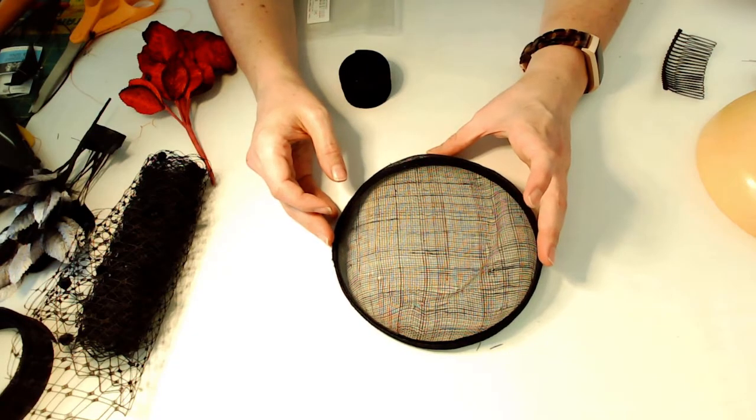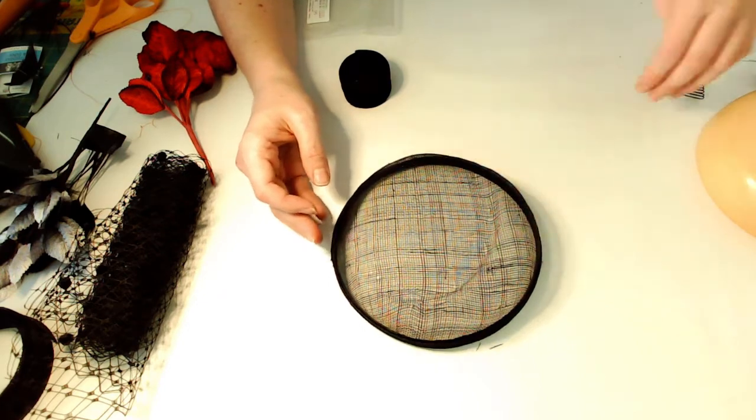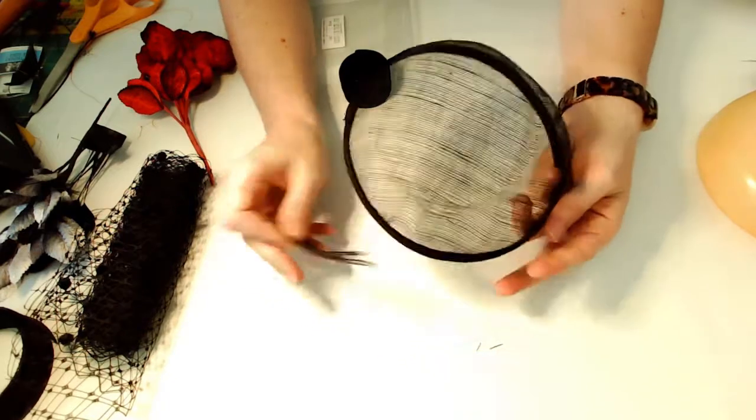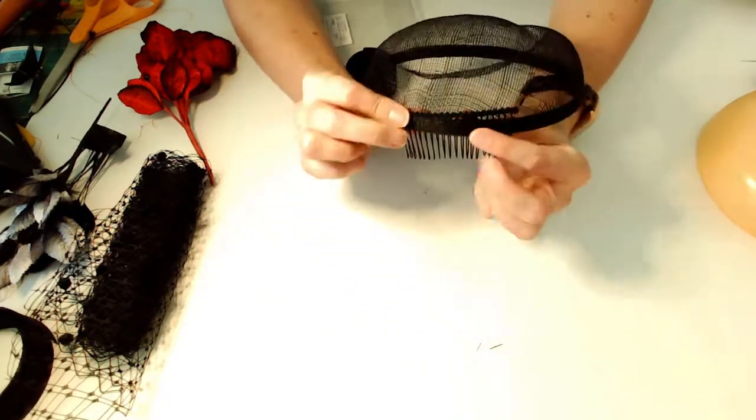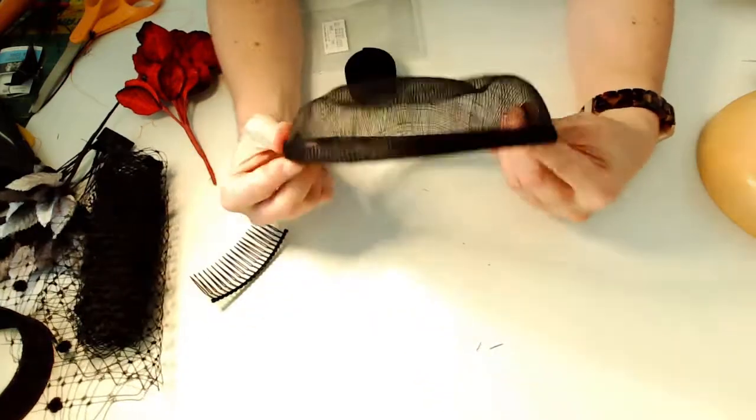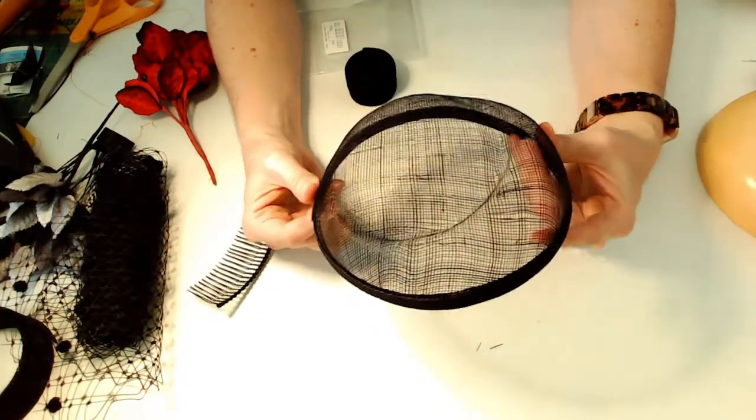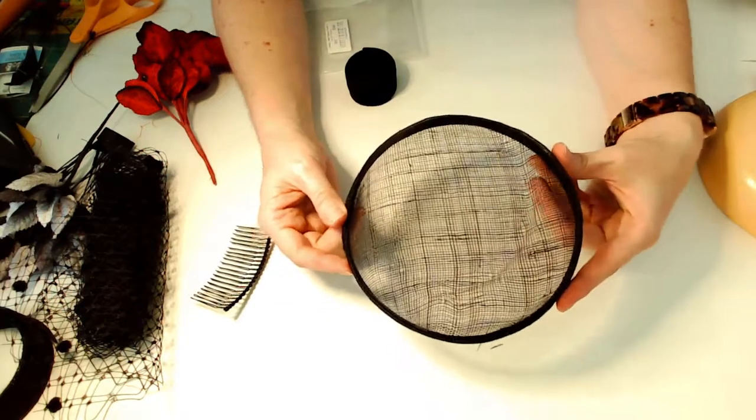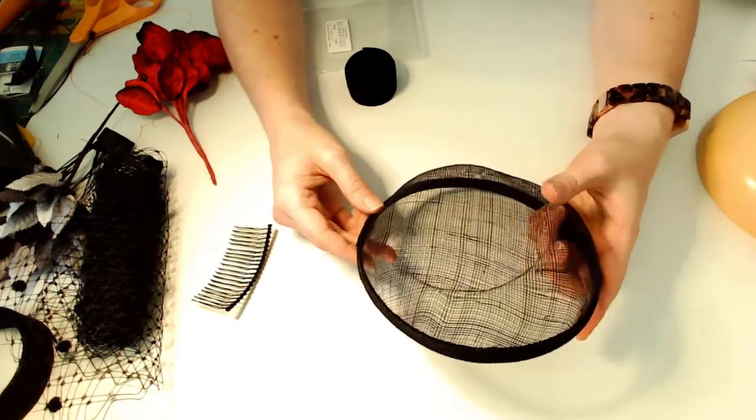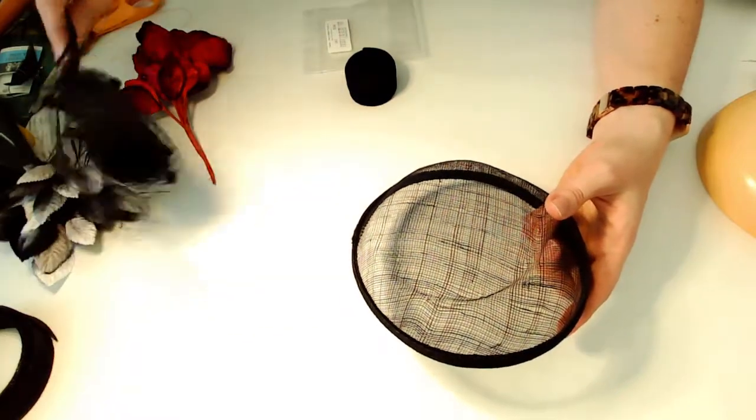And then to finish the hat, there's just a few more things you want to think about. How is it going to stay on the head? So you could use a comb, but that may not work for this style of hat. You would stitch it on the inside. Or you could use a headband since it's a small hat, a headband might help. Or you can make horsehair loops to help pin it to the head.